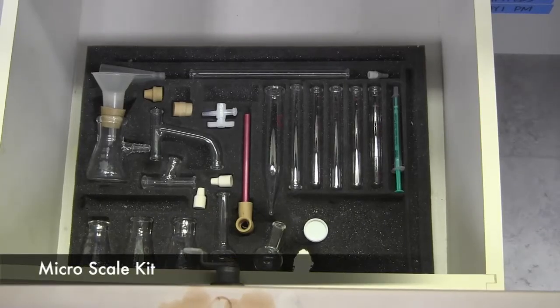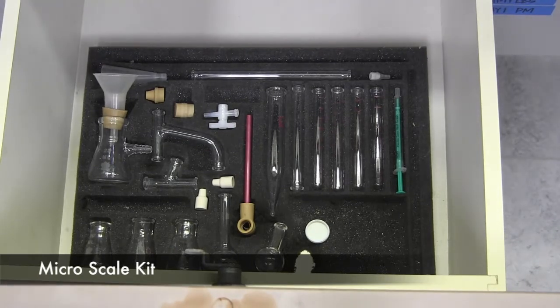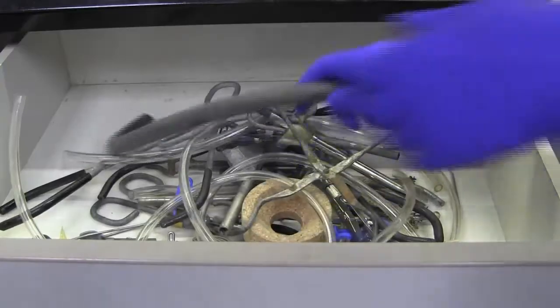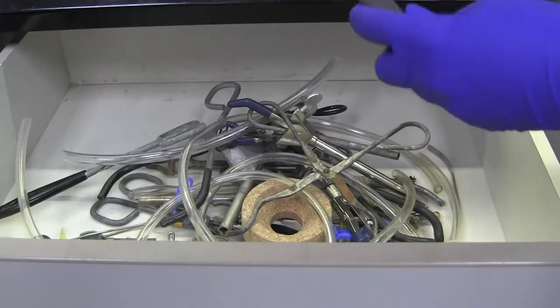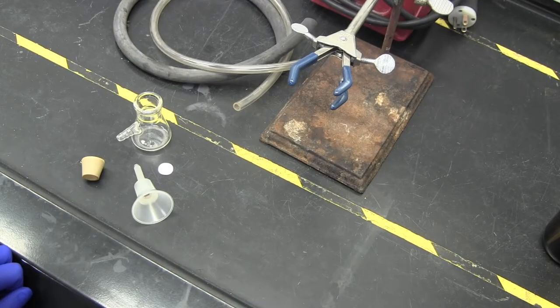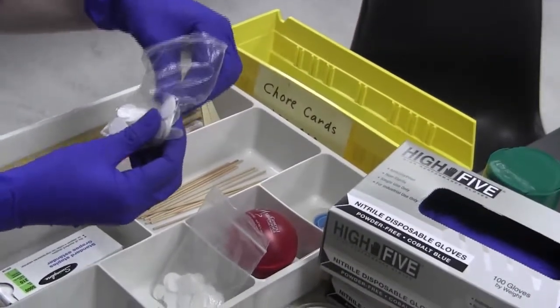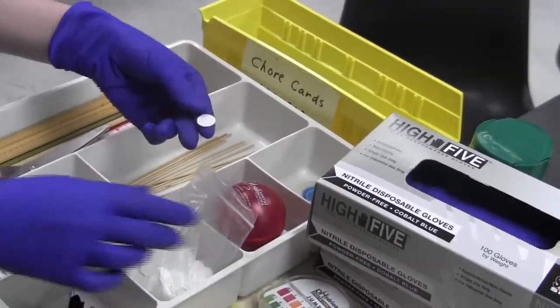Now we will learn how to set up a Hirsch apparatus. The pieces can be found in the drawer with the micro scale kit. You will need a thick black or red rubber tube, a glass filter flask, and a Hirsch funnel with a rubber connector. You will also need a piece of filter paper, which can be found on the cart of supplies in the lab. Otherwise, you can ask your TA for one.